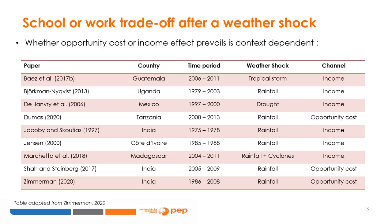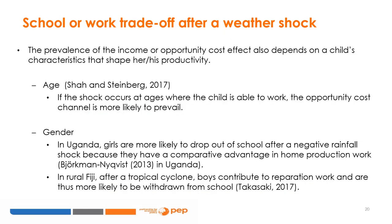The economic literature, for example Dion Vree and co-authors, 2006, has well demonstrated that once children drop out of school after a temporary shock, they have lower chances of going back to school later. This means that if the adverse weather shock's effect on schooling is negative because the income channel prevails, this effect is not only immediate but long-lasting. The prevalence of the income or opportunity cost effect also depends on a child's characteristics that shape their productivity.